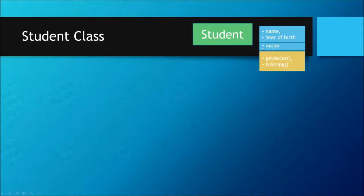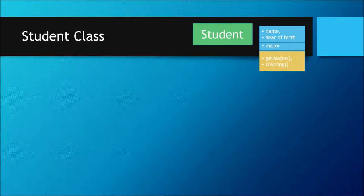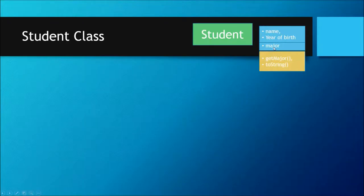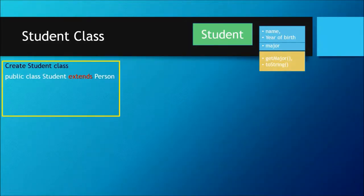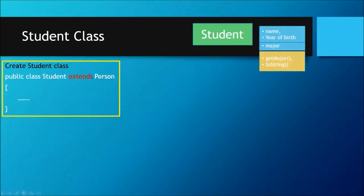Now for the Student class — a student has name, year of birth, and a major. When creating the Student class, keep in mind that it extends the Person class, which is the super class. The Student class is a subclass extending the super class. Person already has name and year of birth, so we don't need to initialize those fields in Student — we only need to initialize major. In the class heading, write: public class Student extends Person.